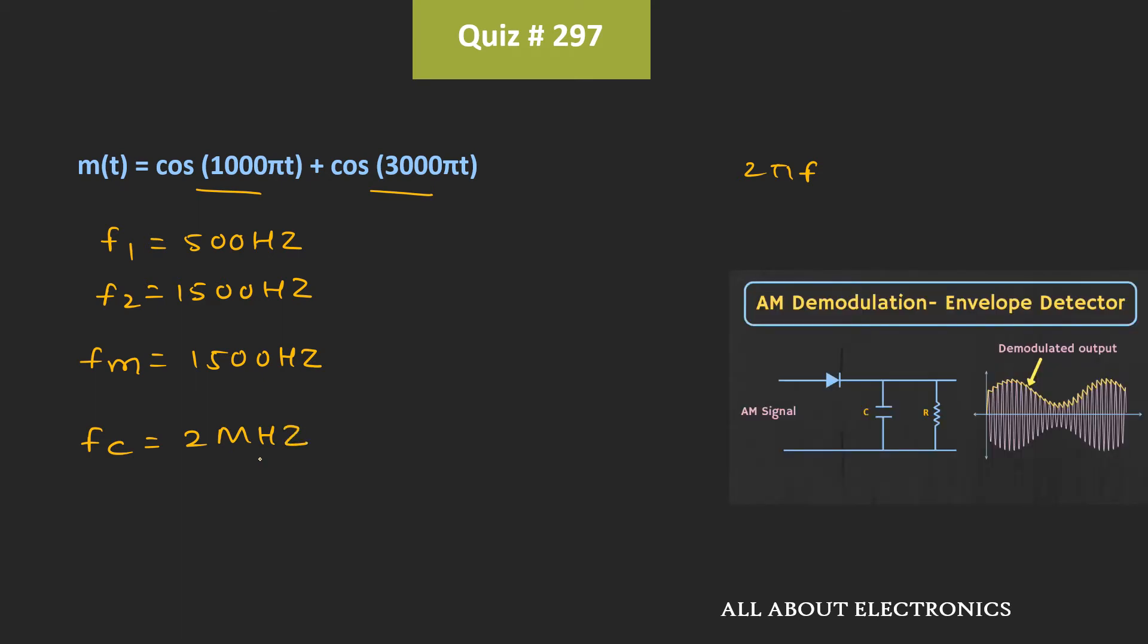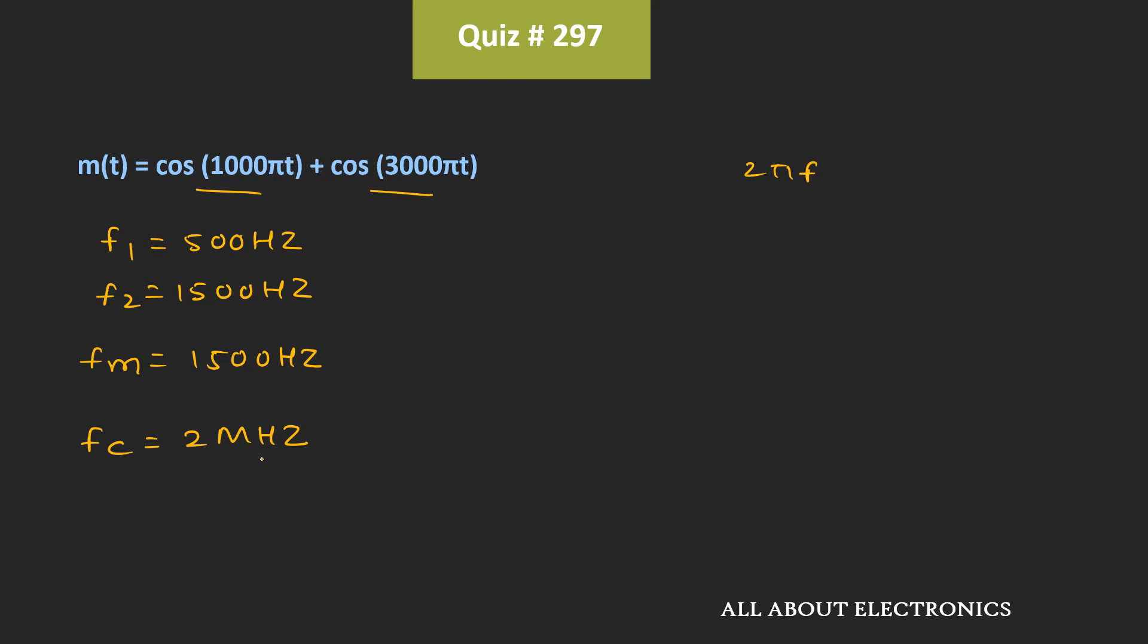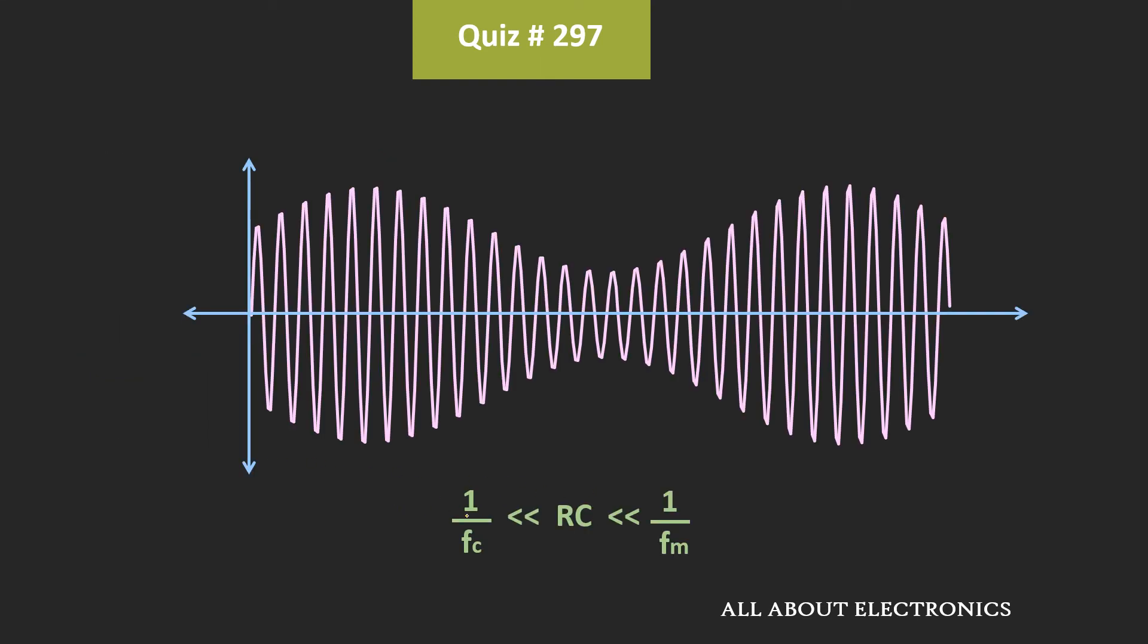Now if you have followed the recent video on the main channel, then you must be aware about the condition which is required for the envelope detector. That means for the envelope detector, the RC time constant should be much greater than 1 over fc and it should be less than 1 over fm.